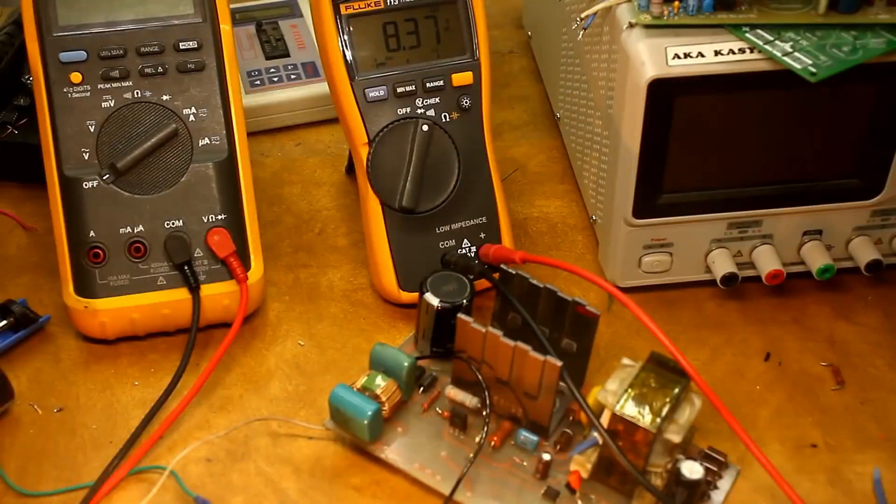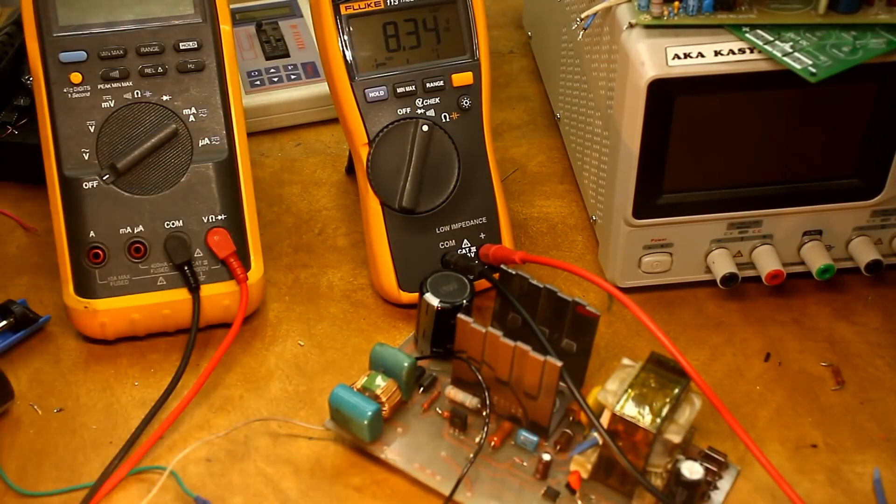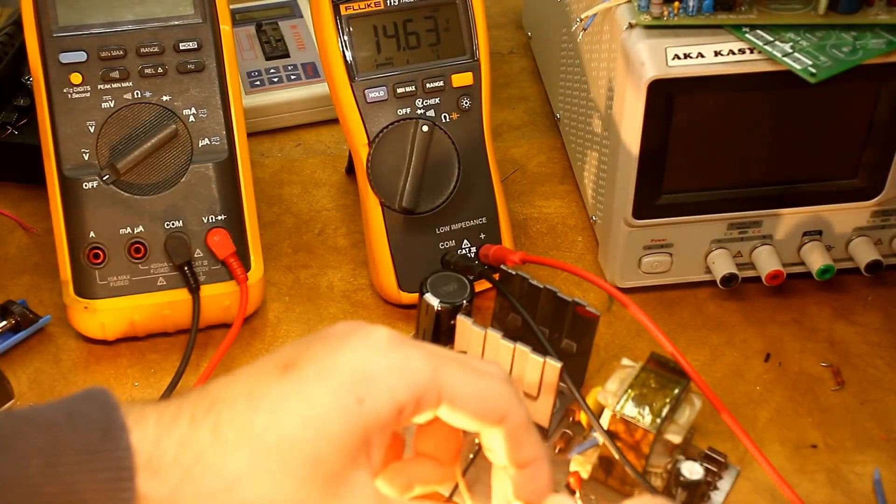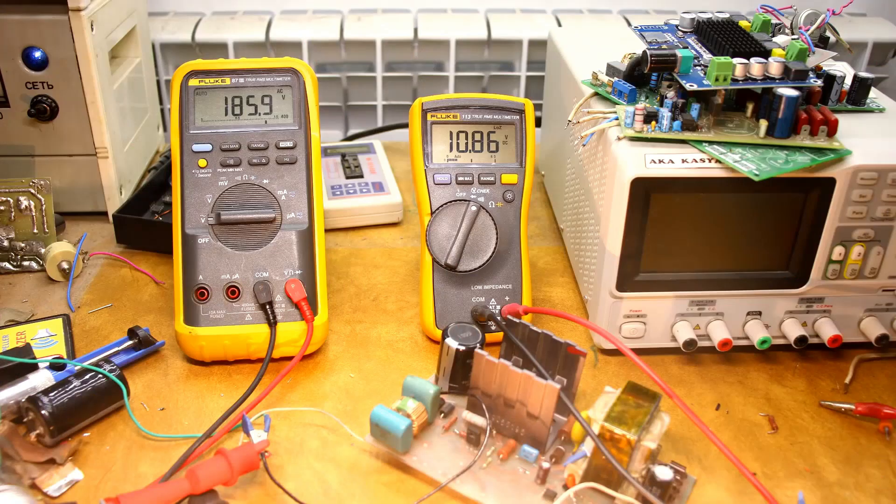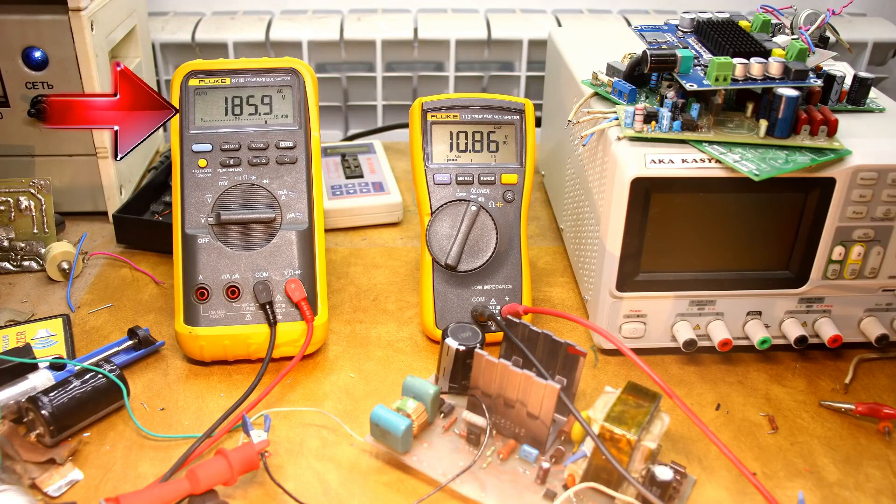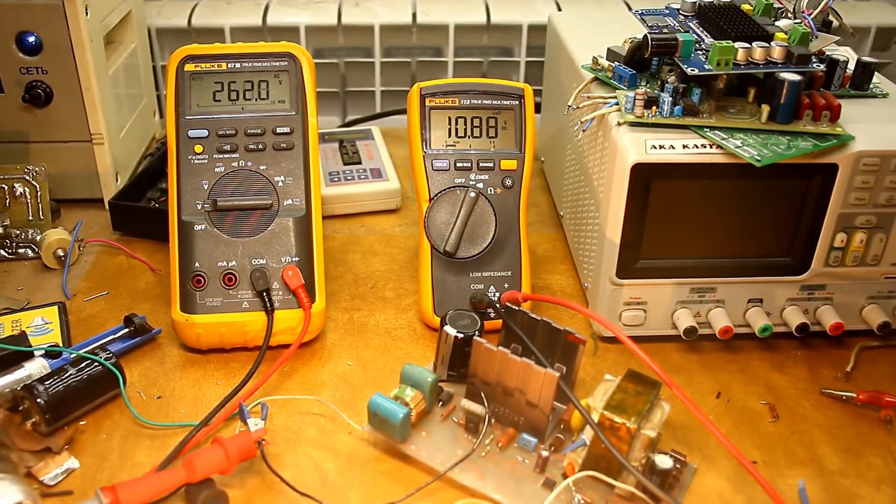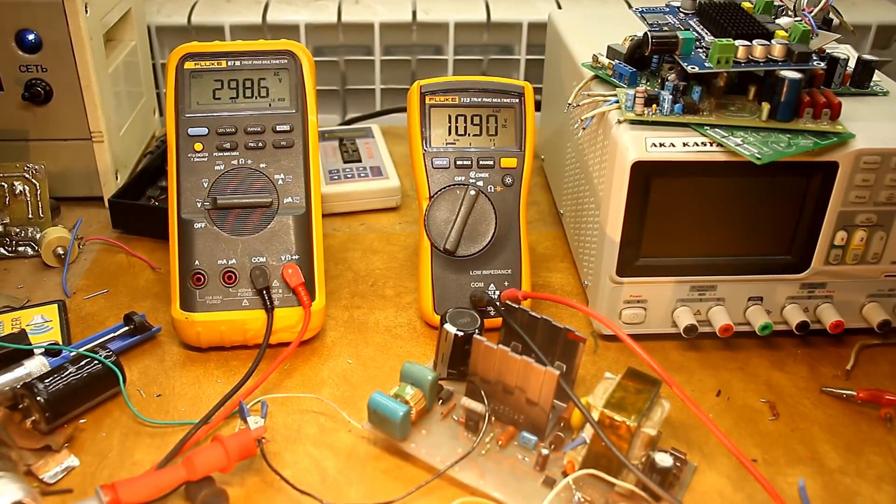Testing. Let's check the adjustment limits of the output voltage, minimum and maximum. Checking the stabilization of the output voltage. The first multimeter shows the input or mains voltage, the second one shows the output. With changes in the mains voltage within a certain range, the output voltage is quite stable.